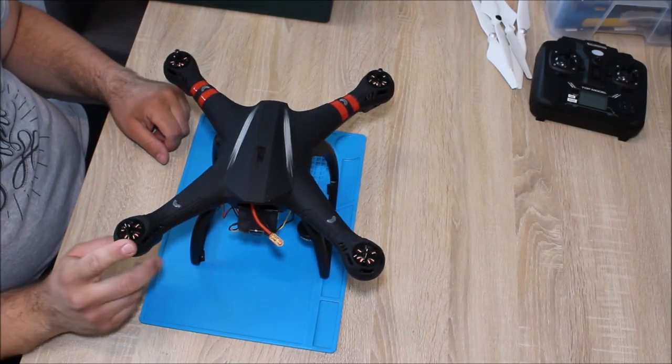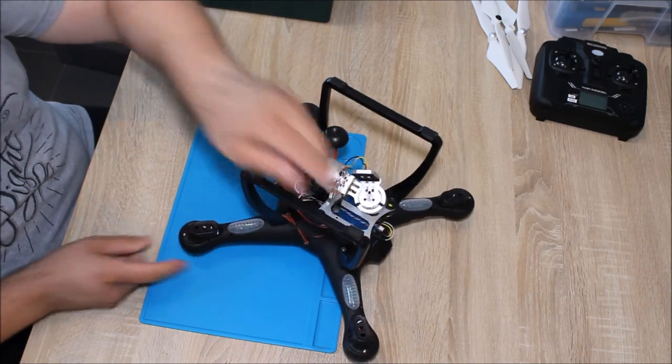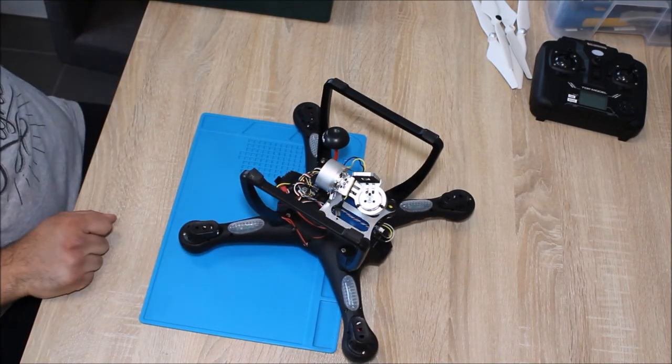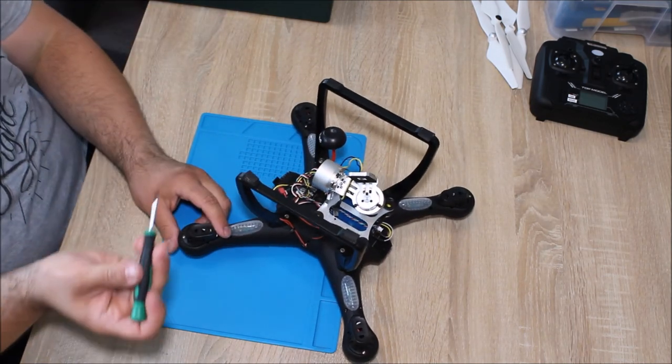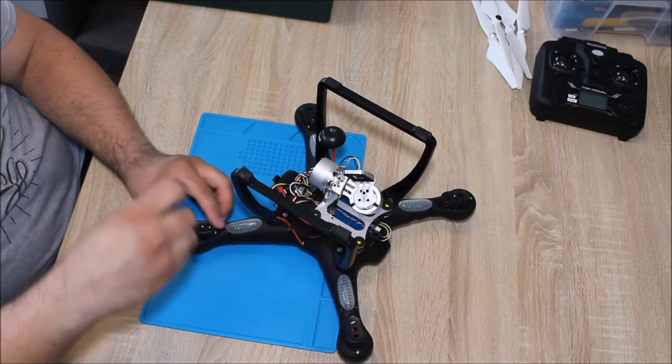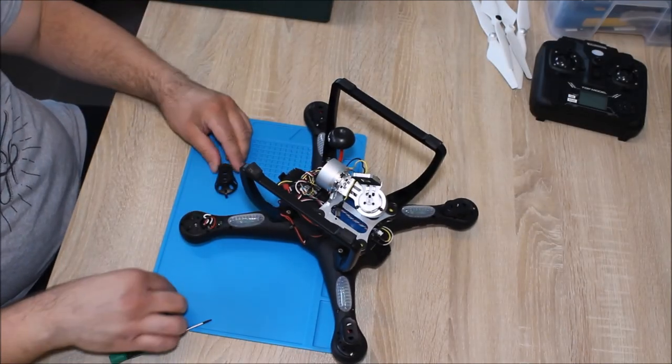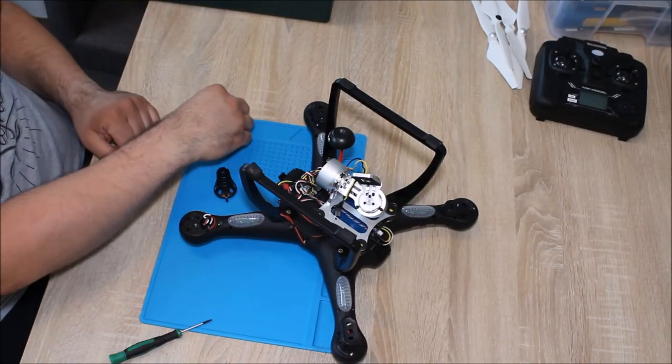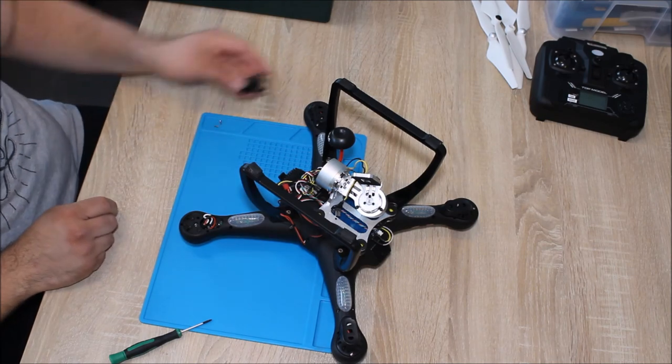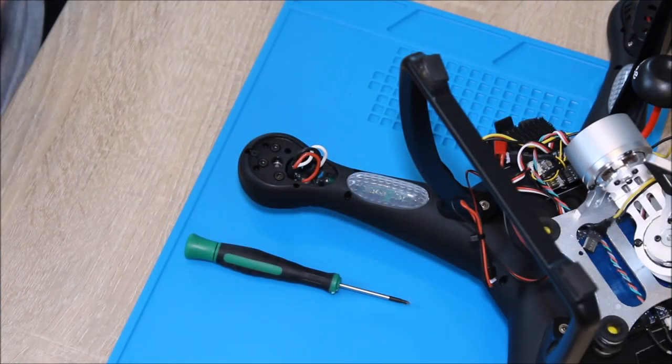So we start by disassembling here this part here to actually get to the motor. We're just using a regular small Phillips screwdriver so we can easily get to the motors. Just two screws and that little piece here just lay it over here. Okay, let's continue.